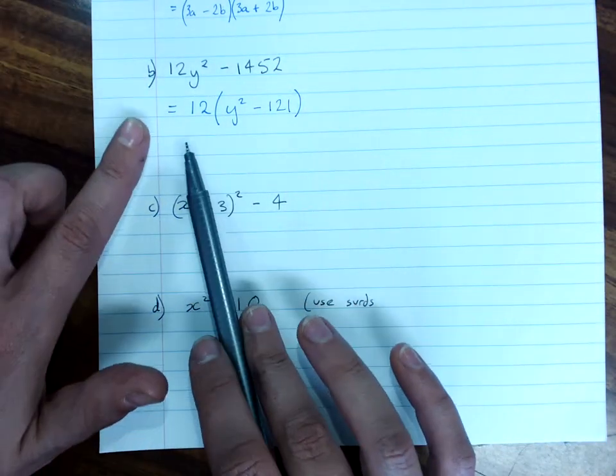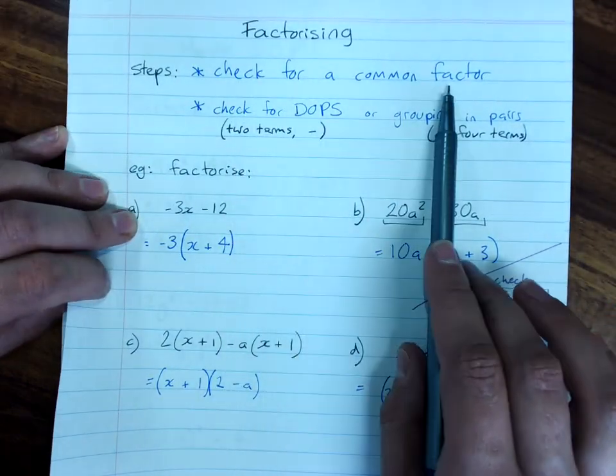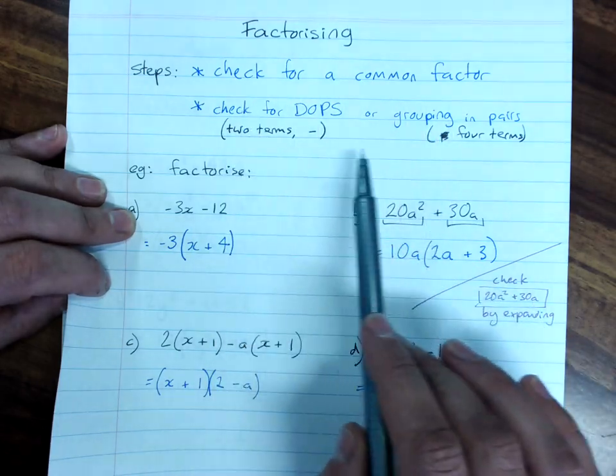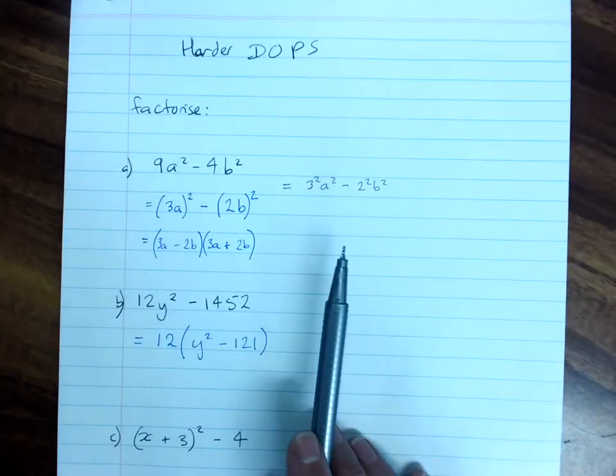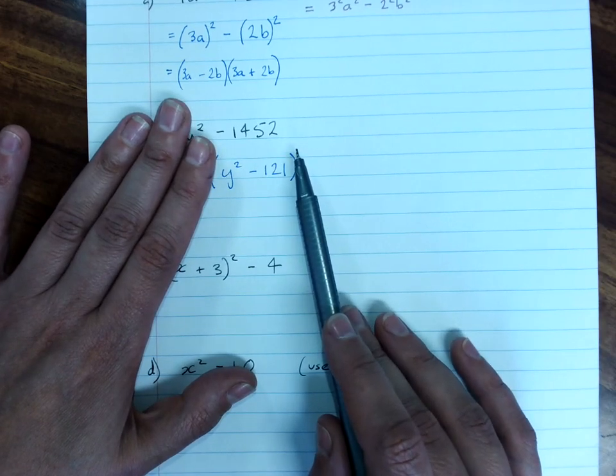And now, as you see from my notes, first you check for a common factor. Then, check if there's anything else you can do. Because, in here, that's a difference of perfect squares.